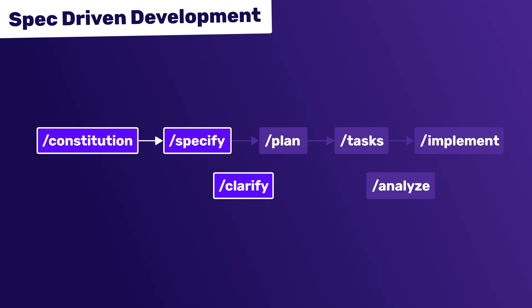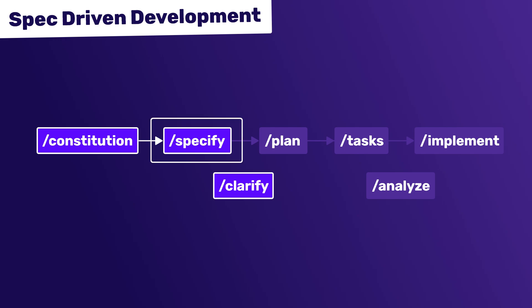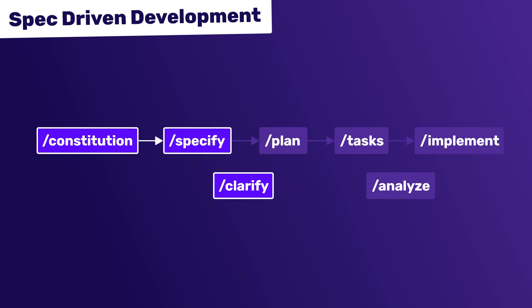We've run three spec kit commands so far: constitution to set up the constitution file, which outlines some grounding unbreakable principles for the project; specify to flesh out a high-level specification for a feature we want to implement, which created a new spec file and switched us to a new branch; and then the clarify command to help pad out ambiguities, edge cases, and areas needing further clarification — a final polish before we move on.